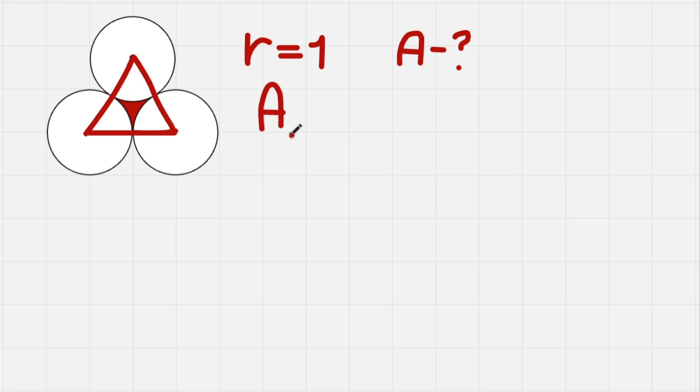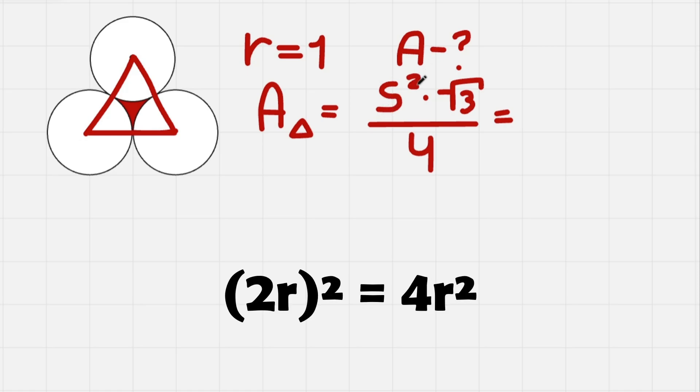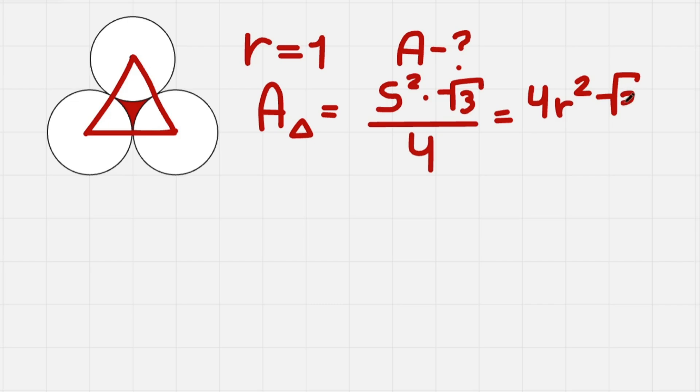So area of the triangle equals, the formula looks like this. We have a side, let it be S for side, squared times square root of 3 divided by 4. That is the general formula. We know that our side is 2r. So if the side is 2r, 2r to the power of 2 will be 4r squared. So 4r squared, square root of 3, and we also divide this by 4. So as you can see, 4 and 4 cancels out, and we get r squared times square root of 3.